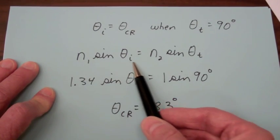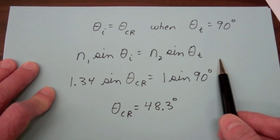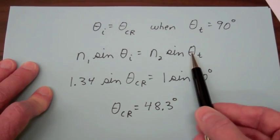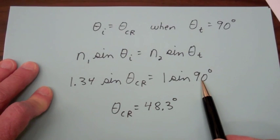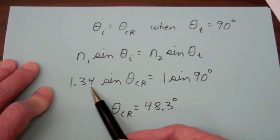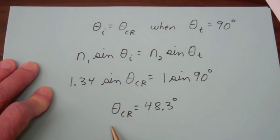But going back to our equation for describing the refraction, if we put a transmitted angle in of 90 degrees and our index of one for air and our measured index of one point three four for water we can obtain that critical angle as forty eight point three degrees.